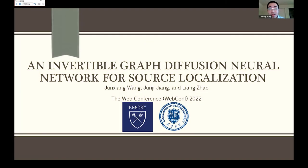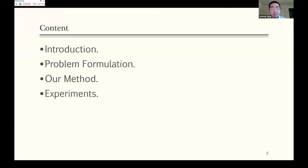Hello, everyone. This is Junxiang from Emory University. I'm honored to be here to present our paper, An Invertible Graph Diffusion Neural Network for Source Localization. This work is done by collaborators from Emory University and Tianjin University.